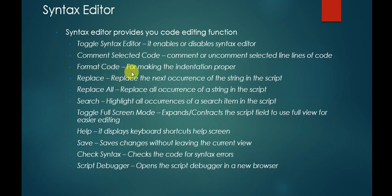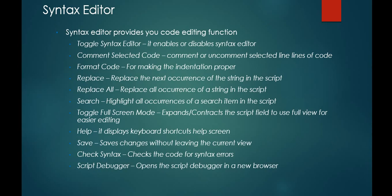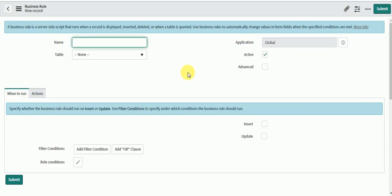For making indentation proper, you can use the code formatter. Then replace — if you want to replace a particular word or particular function from your code, you can make use of that. If you want to use replace all, then you can use search, toggle the script editor in full screen mode and toggle off. You also have help, save, syntax check, and script editor.